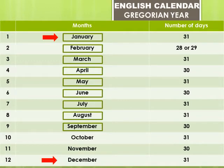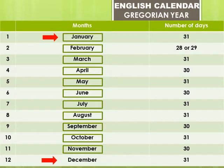The ninth month is September — S-E-P-T-E-M-B-E-R. September has 30 days. The tenth month is October — O-C-T-O-B-E-R. October has 31 days.